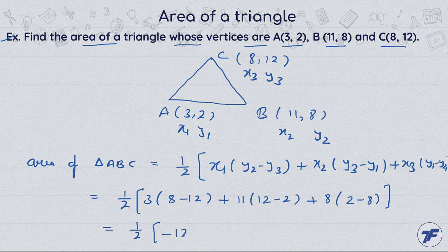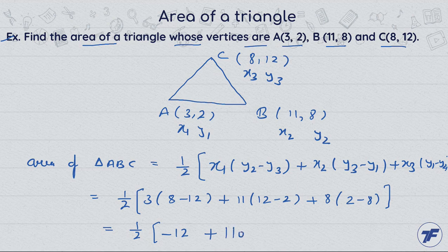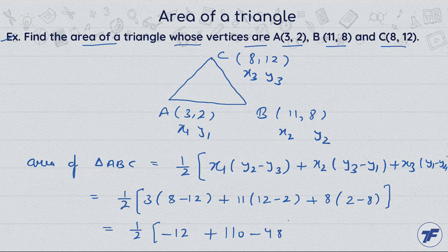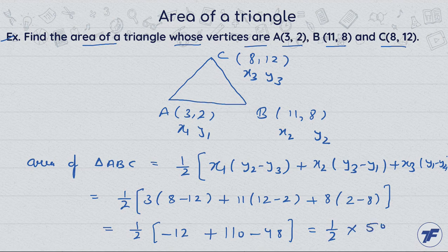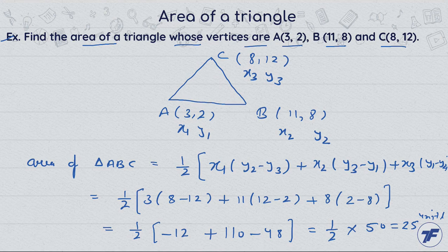This equals 1/2 times [3(8-12) + 11(12-2) + 8(2-8)] = 1/2 times [-12 + 110 - 48] = 1/2 times 50 = 25 square units. This is the first method.